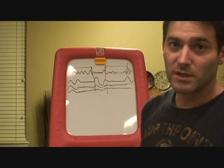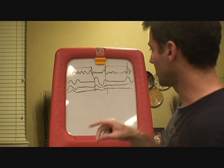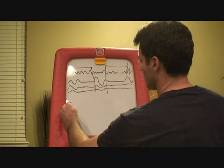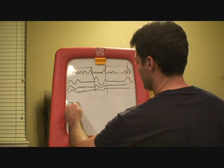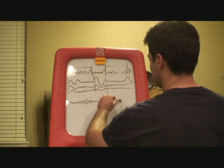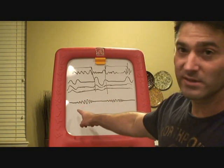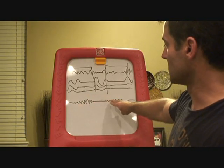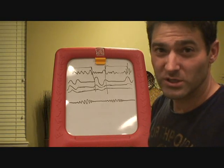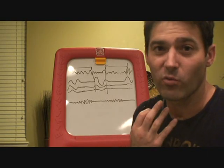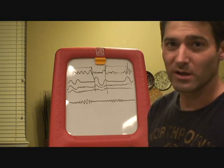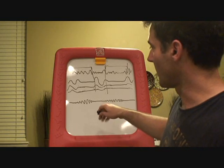The interesting thing about central apnea is there's a different form called Cheyne-Stokes respiration, where you see a waxing and waning. Just looking at the airflow, the nasal part, you get this effect where it increases and decreases, increases and decreases very smoothly. That's Cheyne-Stokes respiration, and that's when your chemoreceptors are out of whack — kind of like an air conditioning unit ranging from super high to super low temperatures.